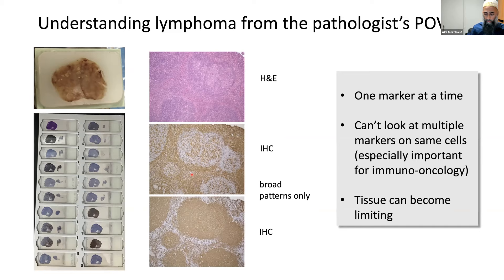The limitation of these methodologies is that you can't look at multiplex markers, but most immune classification requires multiplex markers. Lymphoma classification also requires immunophenotyping, unlike many solid tumors which are largely diagnosed on H&E alone.